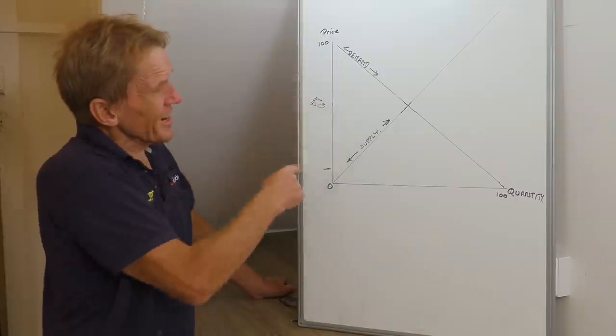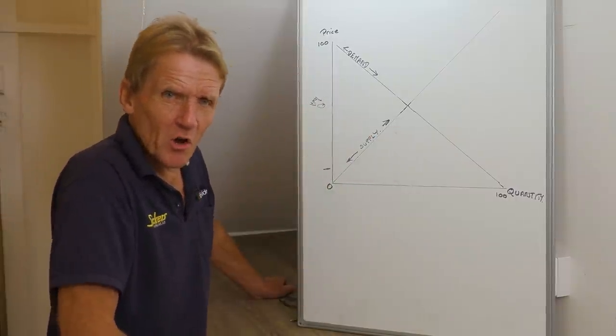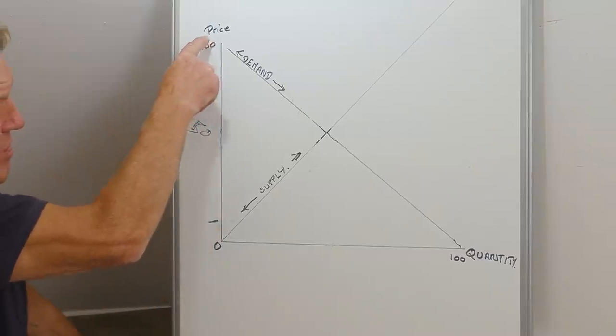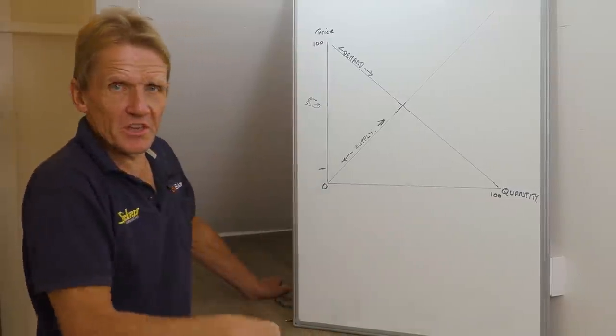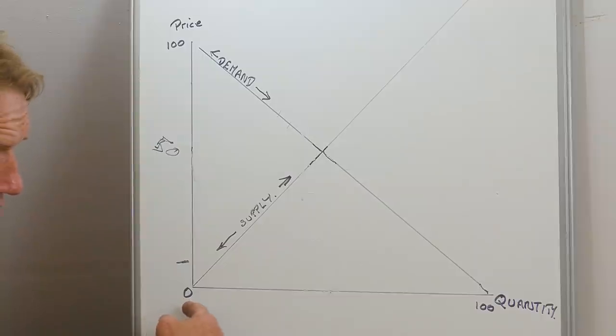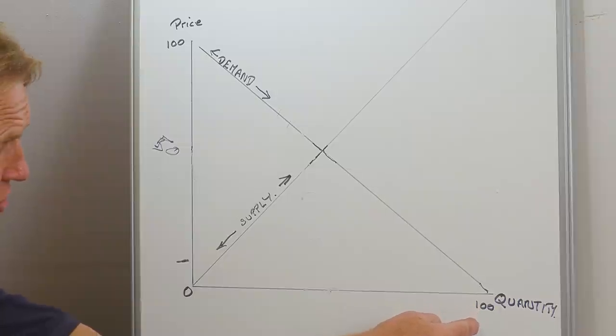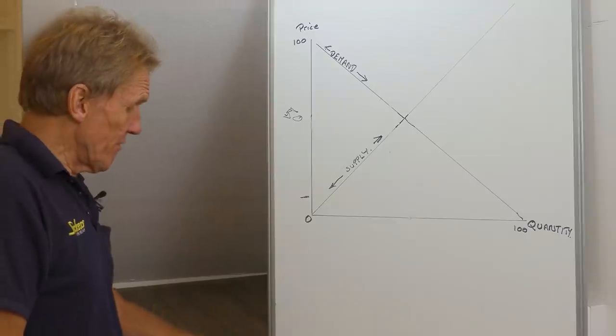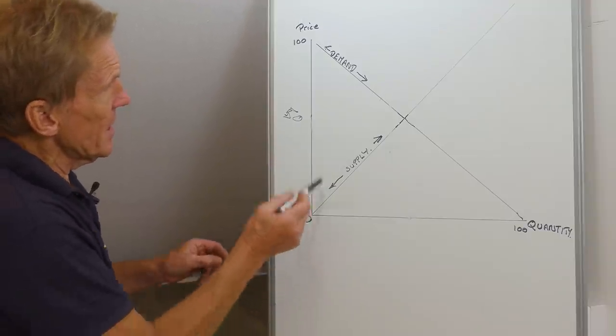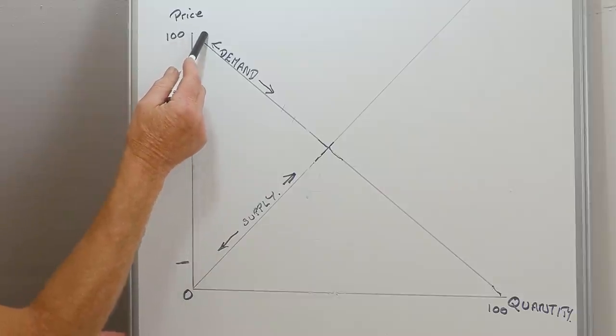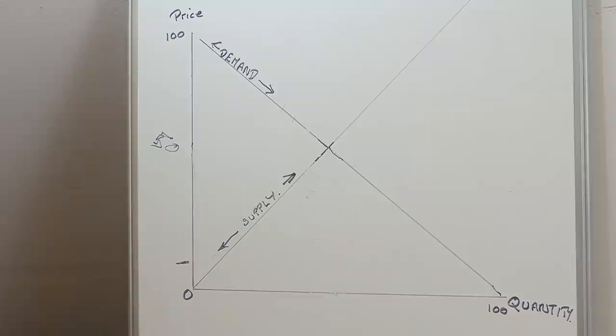What we've got here is a classic supply and demand curve. The economist would say to you that here we have price, here we've got quantity, and this could be anything. So let's suppose it's a builder, so we're going to work 100 hours a week. And because we're only charging 10 pounds an hour, it means that by the end of the week, we've earned 1,000 pounds.